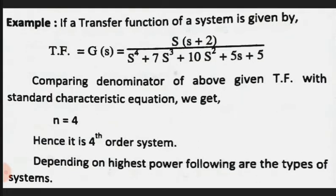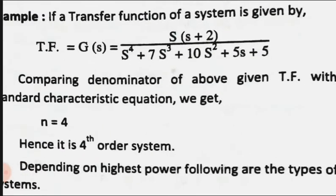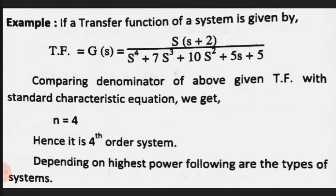Let us see an example of the order of a system. If a transfer function is given, the denominator part is s⁴ + 7s³ + 10s² + 5s + 5. In this, the highest power is s⁴. So comparing the denominator of the given transfer function with the standard characteristic equation, we get n = 4. The highest power in the denominator is 4, so this is a fourth order system.